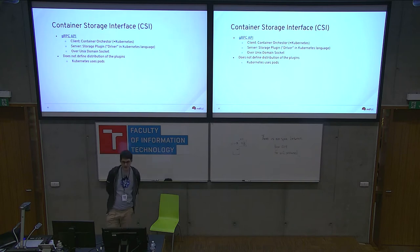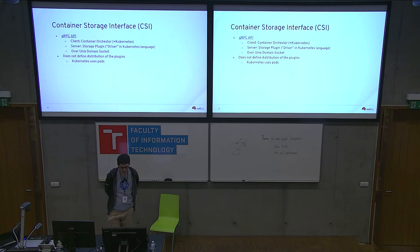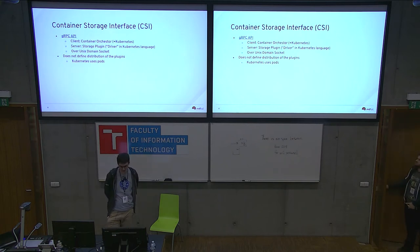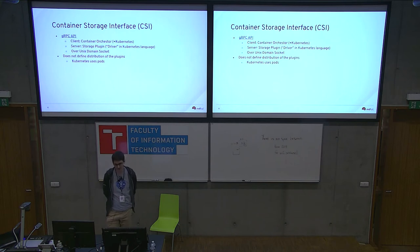On a technical level, it's a gRPC API between the container orchestrator — for the purpose of this talk, Kubernetes — and the server, the guy who does all the work, which is a storage plugin. In CSI the term used is 'storage plugin,' but since in Kubernetes we already use 'plugin' for something else, we call them CSI drivers. The communication between them is usually over a Unix domain socket. As the gRPC protocol implies, it's a remote procedure call — Kubernetes just calls functions of a driver, the driver does something useful, and returns some value.